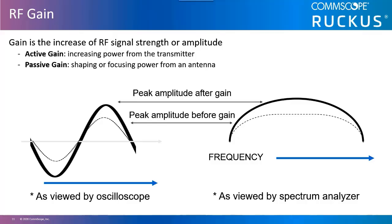RF gain. An RF signal's amplitude can be increased by the use of external devices such as amplifiers and antennas. Gain, or amplification, is an increase in the signal strength and can be achieved with active gain or passive gain.